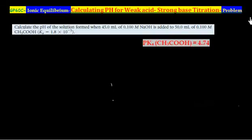This problem illustrates concepts of calculating pH for weak acid in a strong base titration. Calculate the pH of a solution formed when 45 mL of 0.1 M NaOH is added to 50 mL of 0.1 M acetic acid. Ka value for acetic acid is given and pKa value for acetic acid is also given.